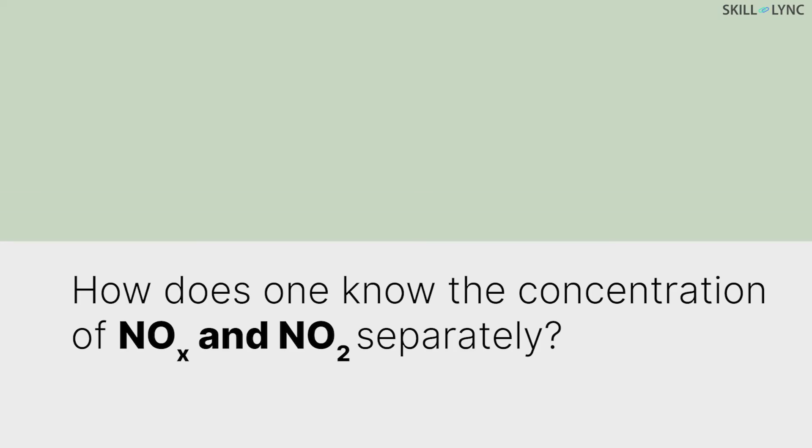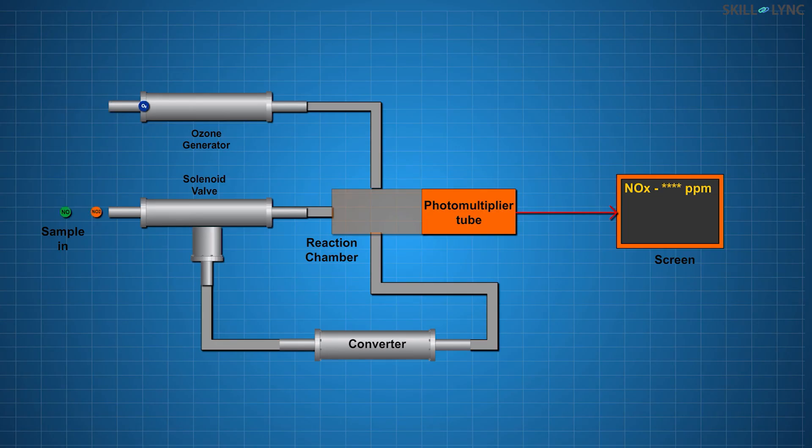But how does one know the concentration of NOx and NO2 separately? For this, the solenoid switches its output and sends the sample gas directly into the reaction chamber. During this time, only the NO molecules react with ozone and get measured. This gives us the concentration of NO. The difference between these two readings gives the amount of NO2 present in the sample.